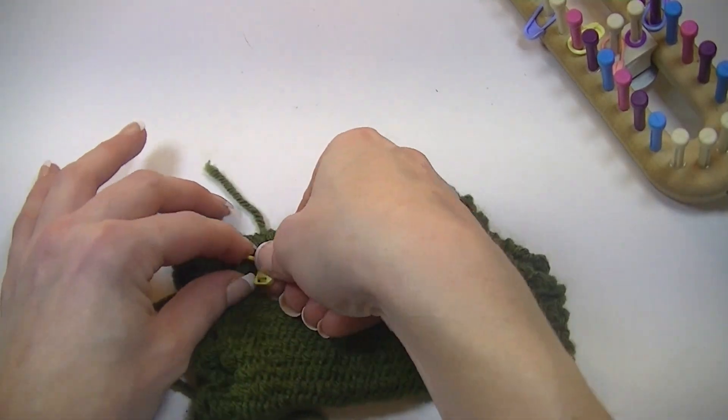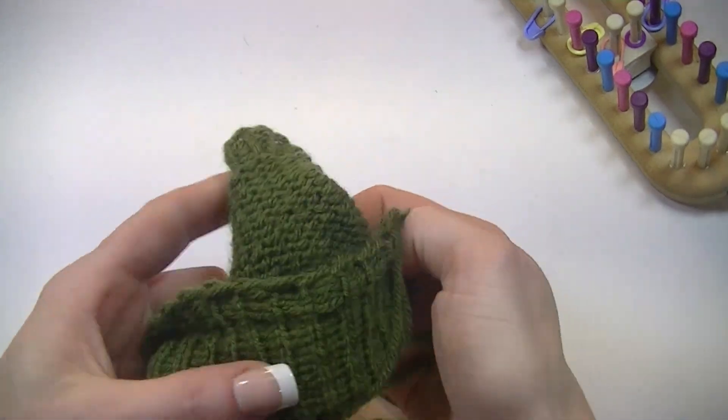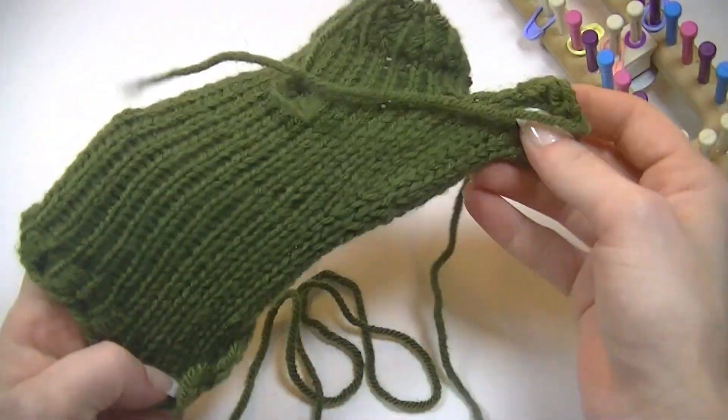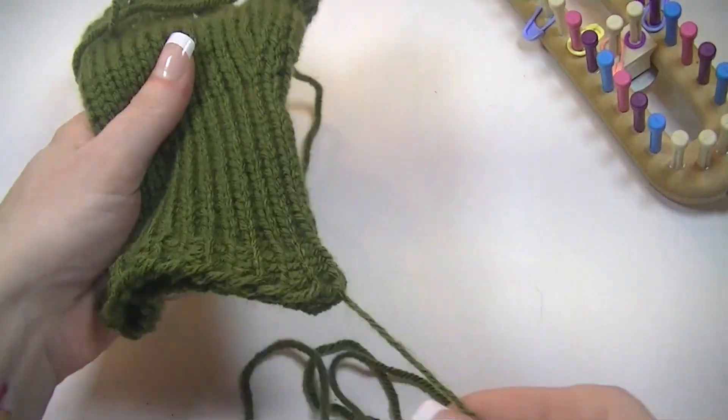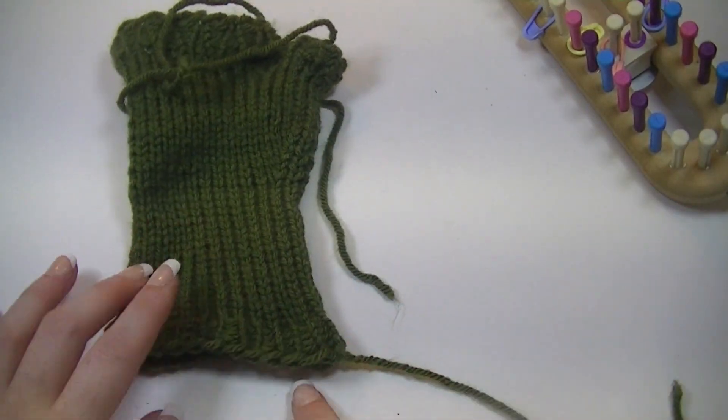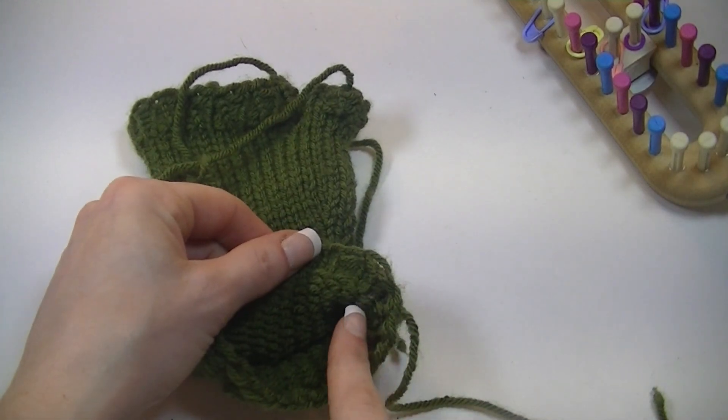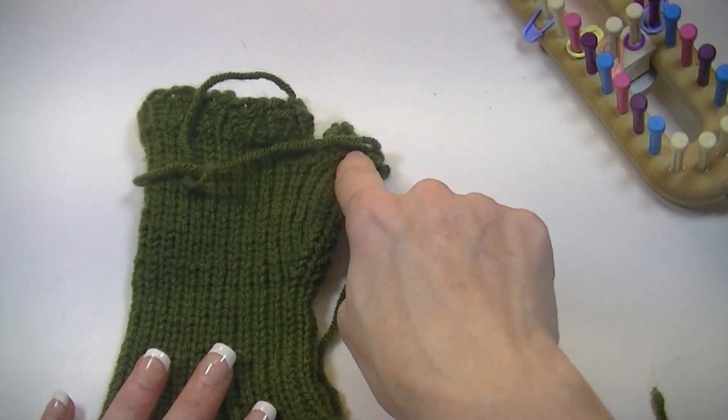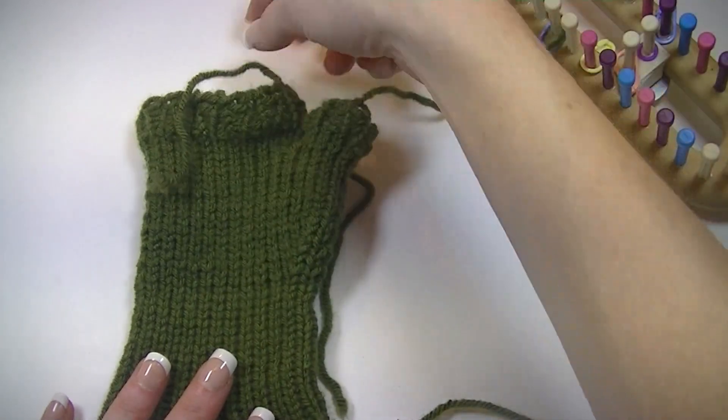At this point, the only thing left is to weave your ends in. I like to take a tapestry needle and take the ends and just kind of go on the inside and just weave them through a bit for the bottom up here and up here.